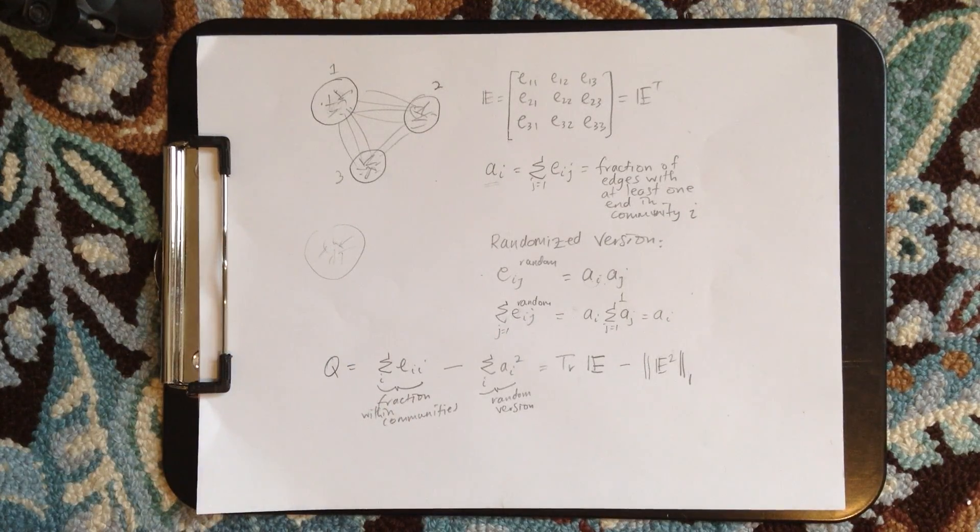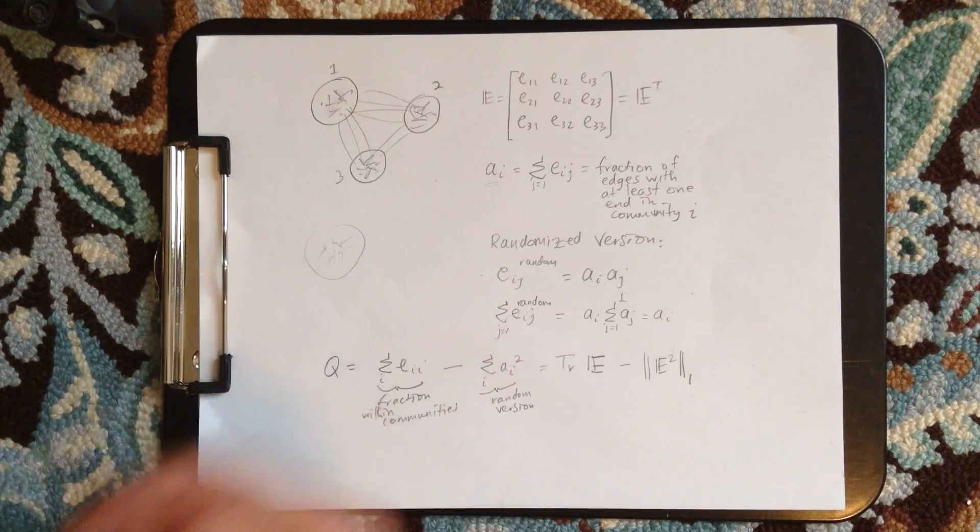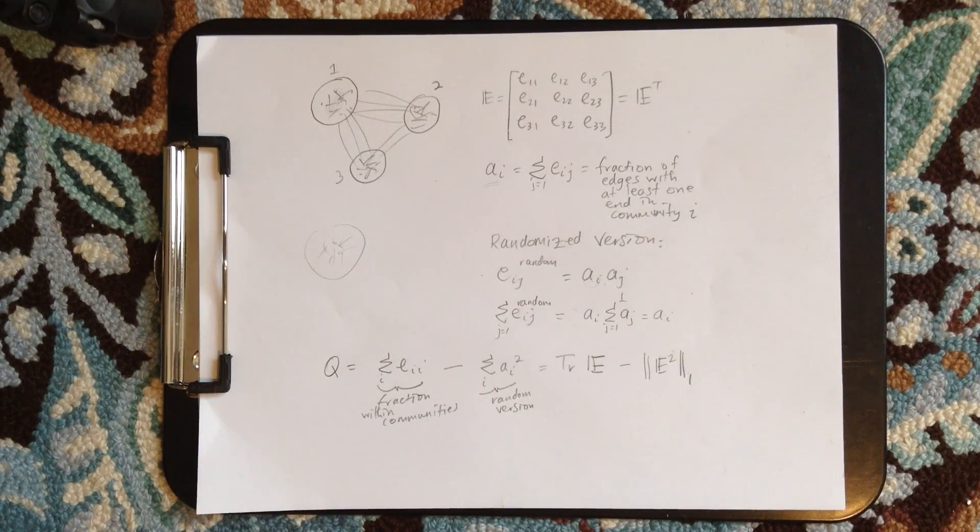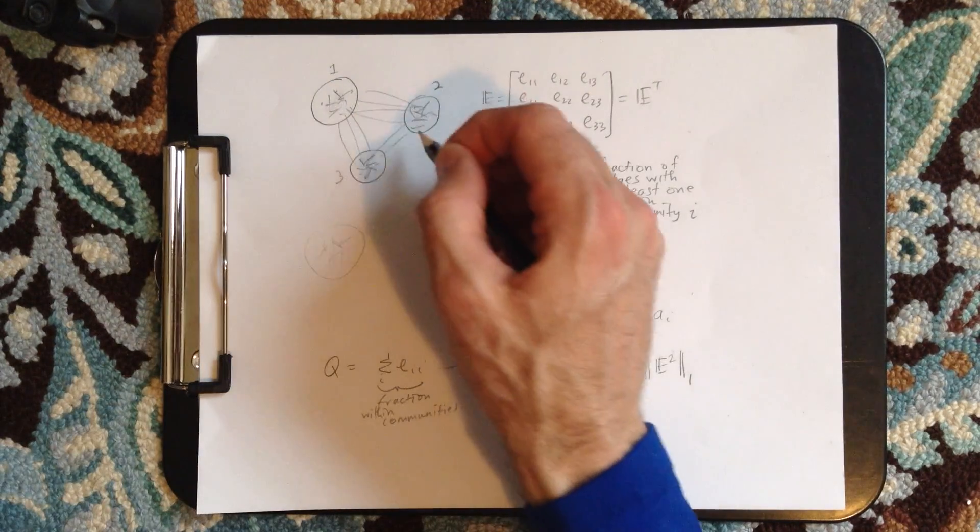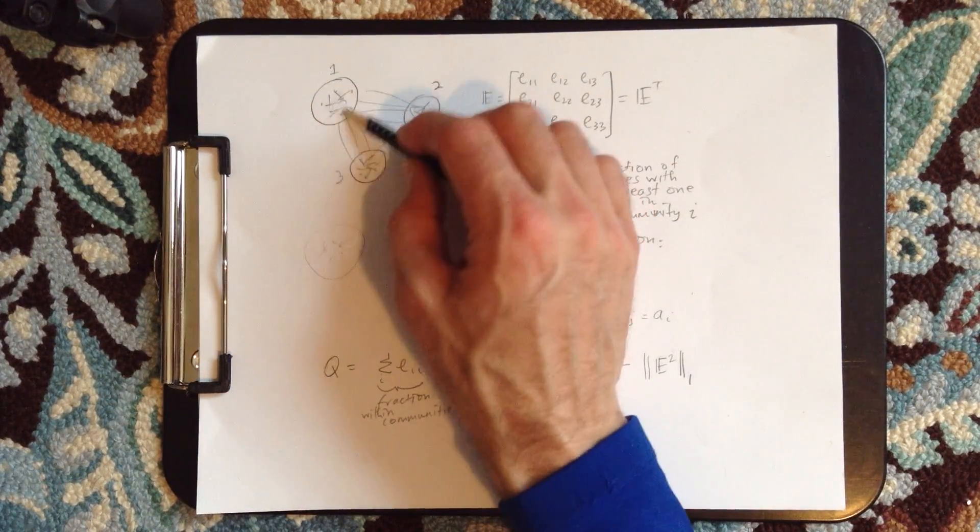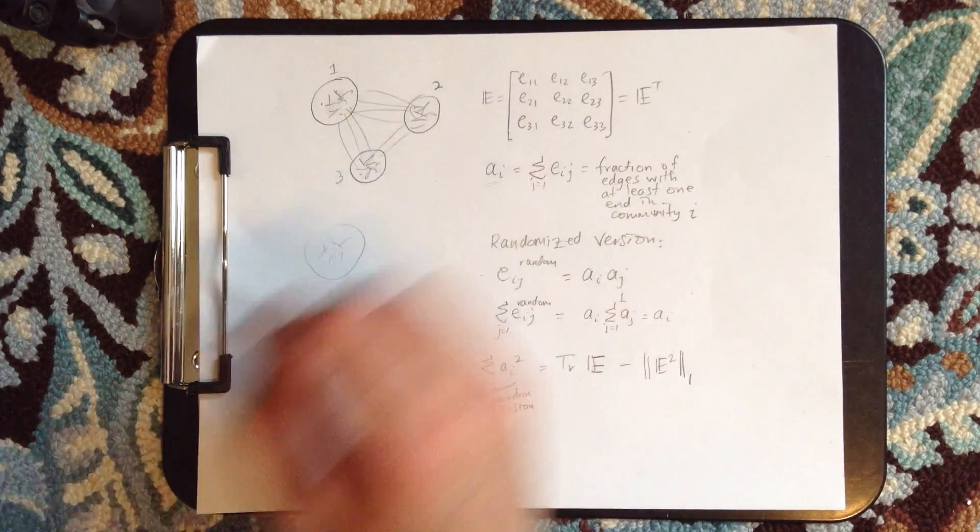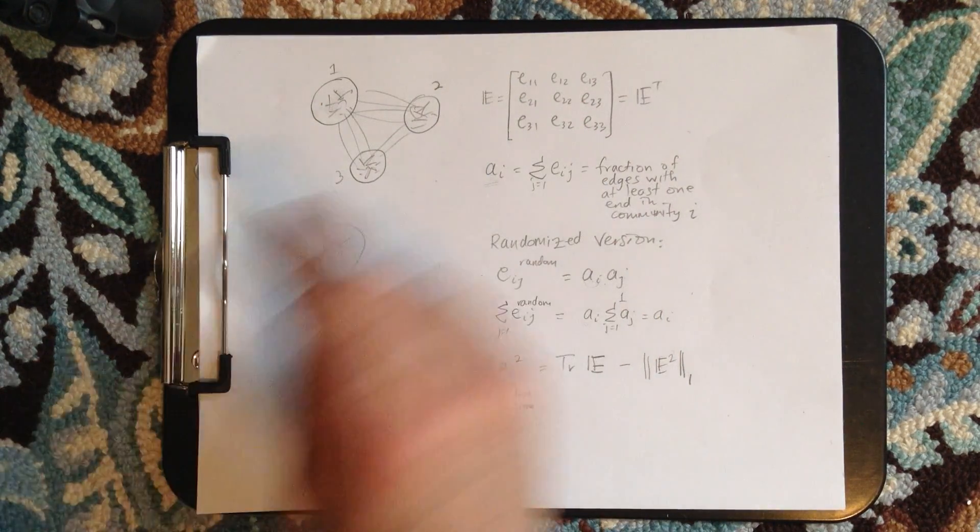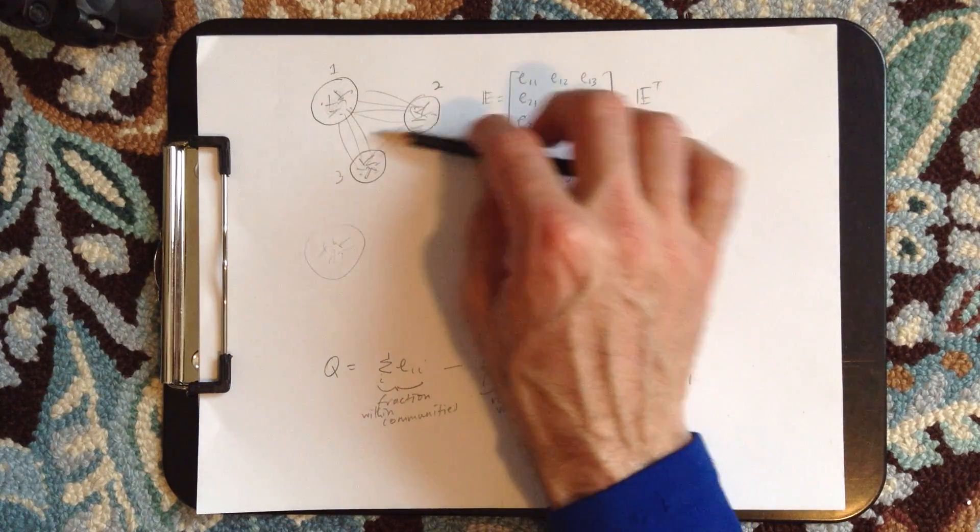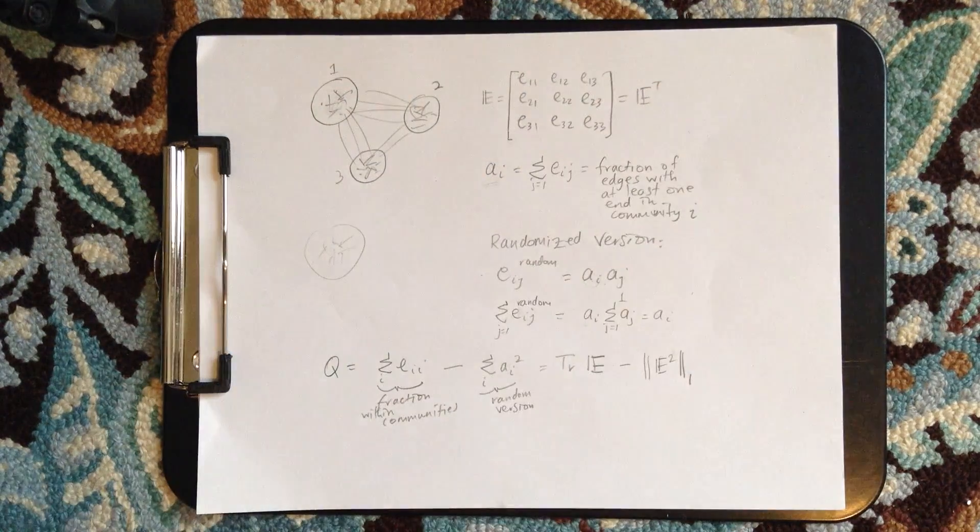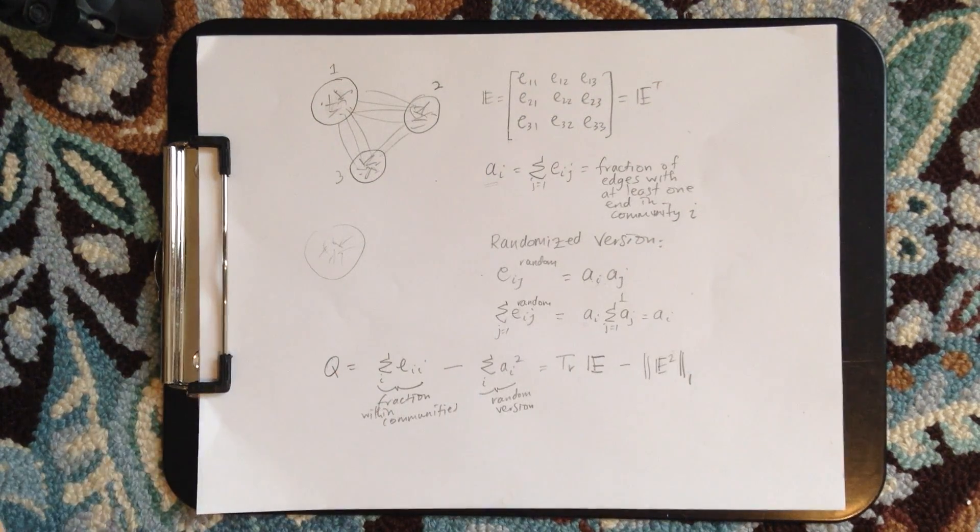So we want to subtract off what we'd see if, what we'd find if we randomized the system. So we're going to keep these same groupings. The same number of edges are going to be related to one and two and three. We're just going to randomly rewire them. So if we've done a really bad job, it's going to be very dense here, very dense here, very dense here, and very few edges in between.